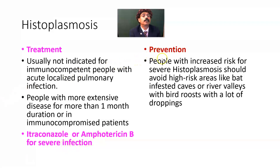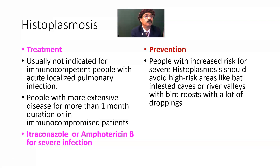For prevention: people with increased risk for severe histoplasmosis include older people, people with diabetes, organ transplant recipients, those taking steroids or chemotherapeutic drugs, and those in poor physical condition. They are also prone to allergic reactions. High-risk individuals should avoid bat-infested caves or river valleys with bird roosts that have large amounts of droppings.